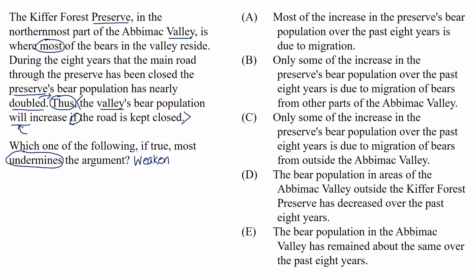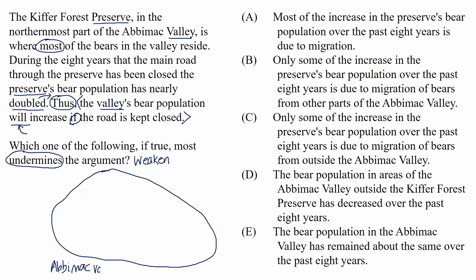Now why does the arguer think this is true? The evidence gives us some context and relationships, so it's important to get the information straight. There's a preserve which is in a valley, and most of the bears in the valley are in that preserve. For the last eight years, the road through the preserve has been closed and the preserve's bear population has almost doubled. It's completely okay to draw a picture for ourselves on test day. So let's say this is the Abamac Valley, and at the northernmost part we have the Kifer Forest Preserve. Most of the bears in the valley reside in the preserve, and over the last eight years while the road was closed, the bears' population has almost doubled.